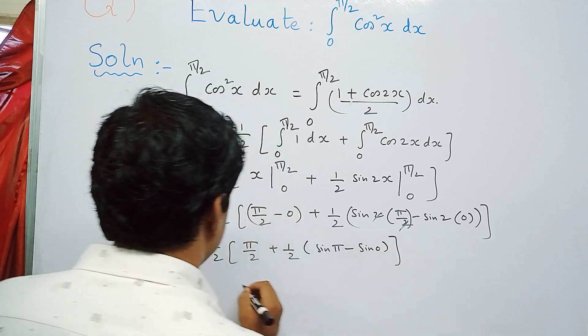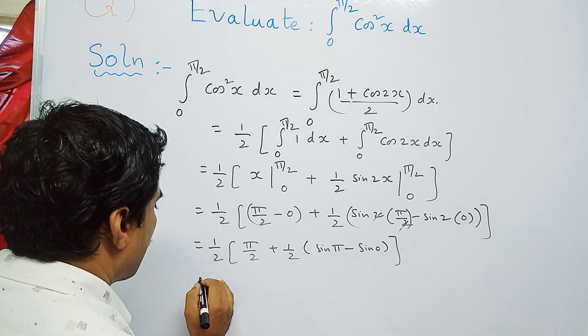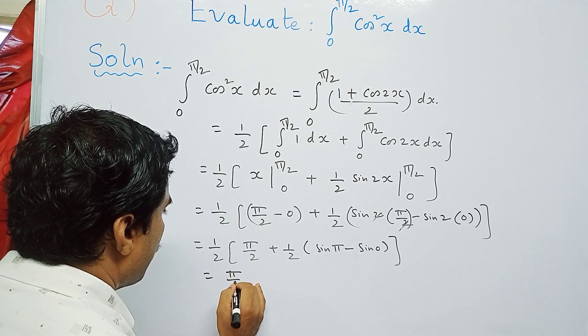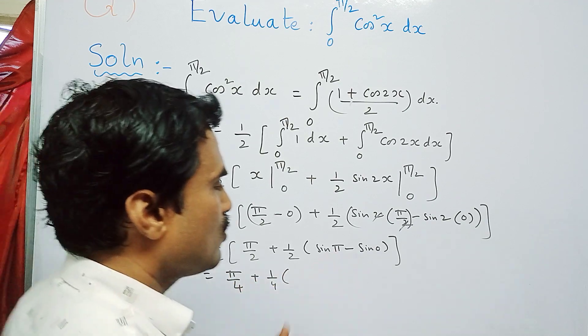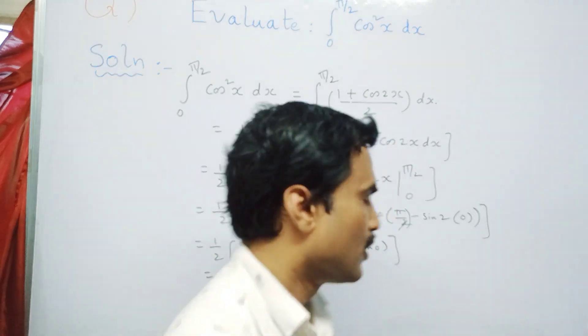Now you can write this as 1/2. Take this 1/2 inside, so this will be π/4 plus 1/4. Now sin π, as in our sine π value is 0 because sin(nπ) is 0.